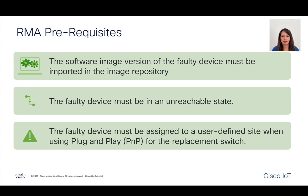In order to complete a replacement using the Catalyst Center workflow, we need to assure that the image of the faulty device is part of the Catalyst Center repository. Second, the device we are replacing needs to be offline. And third, if we are using the plug-and-play process as described, we need to make sure that the faulty device was part of a site in the Catalyst Center hierarchy.